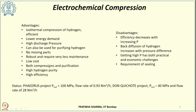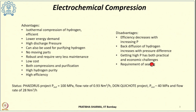The major disadvantages associated with electrochemical compressors are that efficiency decreases with increasing pressure. There is back diffusion of hydrogen as the pressure difference between both electrode sides increases, and that increased permeation is undesirable. If we want to get higher pressure, there are both practical and economic challenges associated with it.